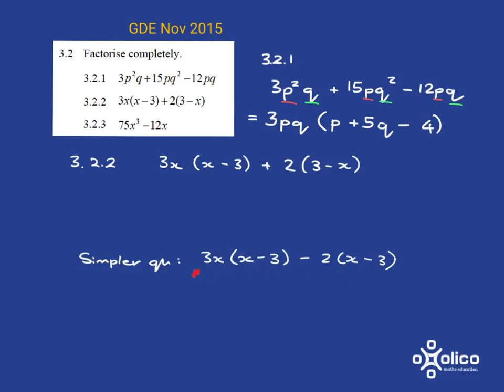Okay, so if you have a look, focus now on my simpler question. If I asked you to factorize this, the main thing I want you to notice is that here, this whole x minus 3, if you just treat it as one thing, then that's a common factor that you can take out. So there's an x minus 3 over here in this one, and there's an x minus 3 over here in this term. So we can take out that x minus 3. And we're left with a 3x from this term, and we're left with minus 2 from that term. So we can factorize this very nicely just by pulling out that bracket of x minus 3.